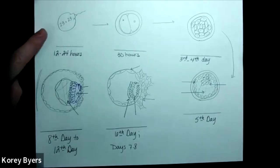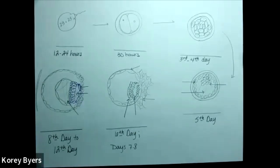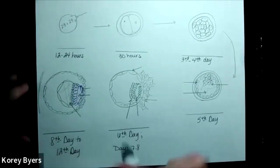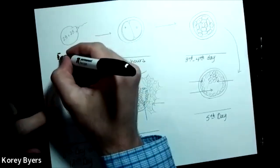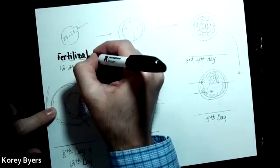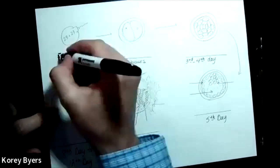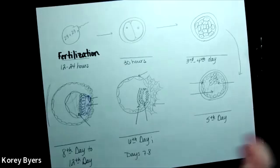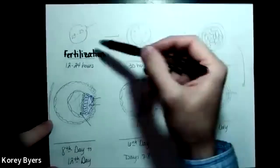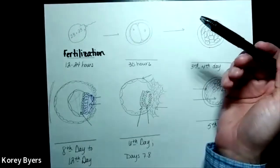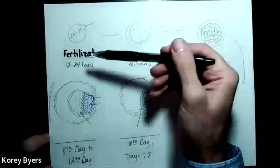And then if sperm is present within 12 to 24 hours, what occurs? Let's use the Sharpie. Fertilization. So if sperm is present, that oocyte, or after ovulation it would be the mature ovum, will be fertilized.